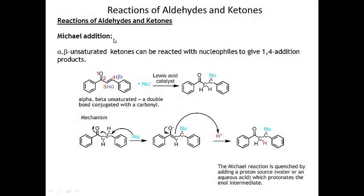This reaction is called Michael addition or conjugate addition. You have an alpha-beta unsaturated carbonyl — the alpha position is at carbon three and beta is at carbon four. If you react a nucleophile with this in the presence of a catalyst, the nucleophile adds to the four position. In the mechanism, the nucleophile attacks the beta carbon, the double bonds shift, and the pi bond between carbon and oxygen breaks to give an enol intermediate. Upon protonation with acid, the pi bond reforms between carbon and oxygen, and those two carbons pick up the proton to give the Michael product.